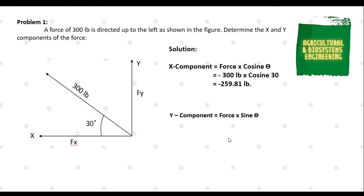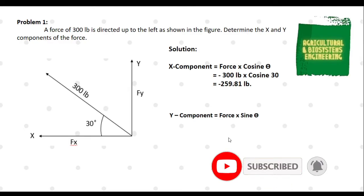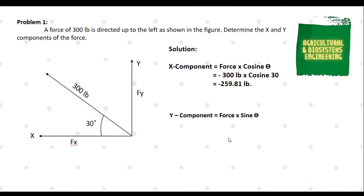Next, we solve for its Y component. To solve for it, we will use the formula force times sine theta. In solving the Y component, the function to be used is sine. We substitute the value of force and theta: 300 pounds times sine 30. We have a positive value for our force because the direction of the force is going up to the left. We simply solve and we now have a final answer of 150 pounds.